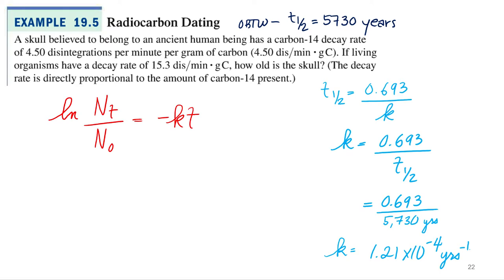Alright, so now that I've got my rate constant, I can go back to this original question. How old is the skull? So what are we looking for? What variable are we solving for in the integrated rate law equation? N sub t? T? Oh yes, T, yeah, how old, what the time is between those two. So yeah, we're looking for t.